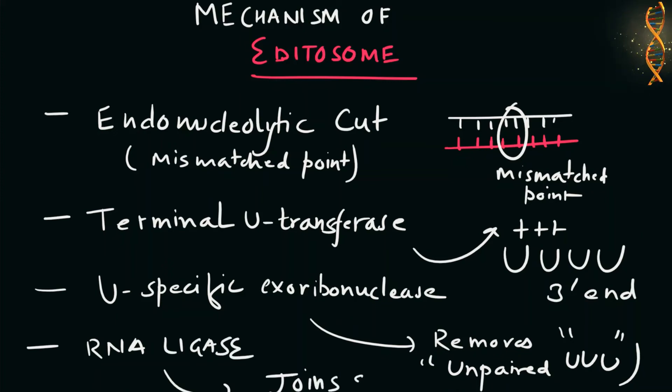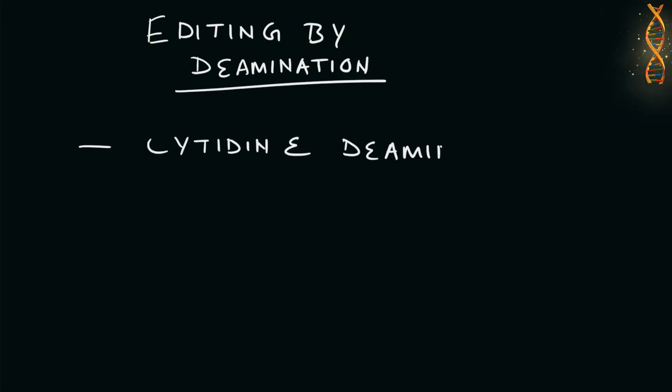Another mechanism of RNA editing is editing by deamination. The editing involves cytidine deaminase that deaminates a cytidine base into a uridine base. Also, there is another type of deamination where adenosine is deaminated into inosine.